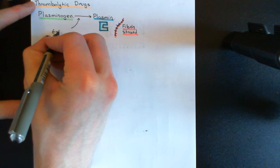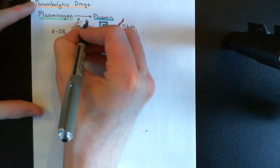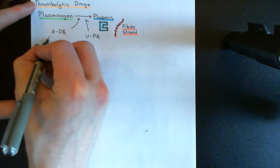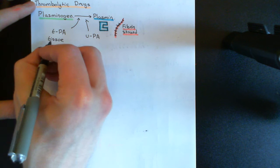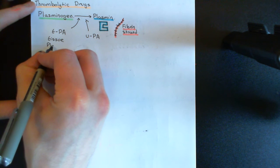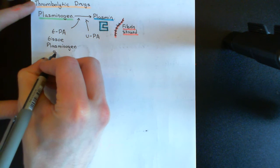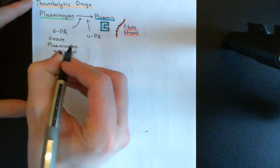These two enzymes are known as tissue plasminogen activator — abbreviated to TPA — and urokinase plasminogen activator, known as UPA. Tissue plasminogen activator is an enzyme which can be released by endothelial cells and will activate the plasminogen nearby the blood clot.